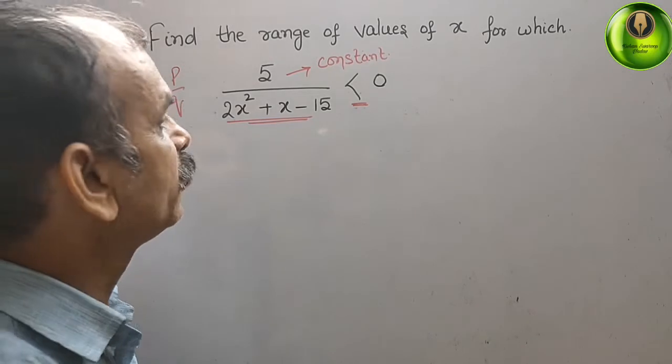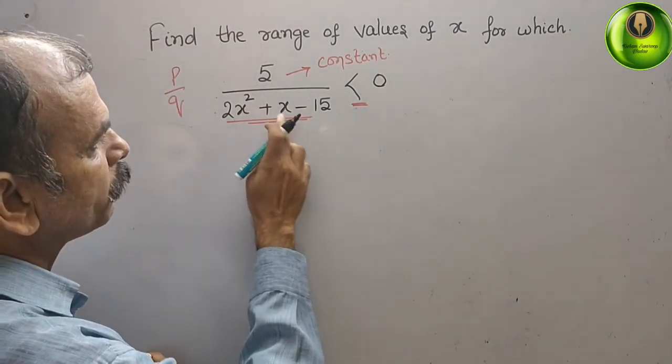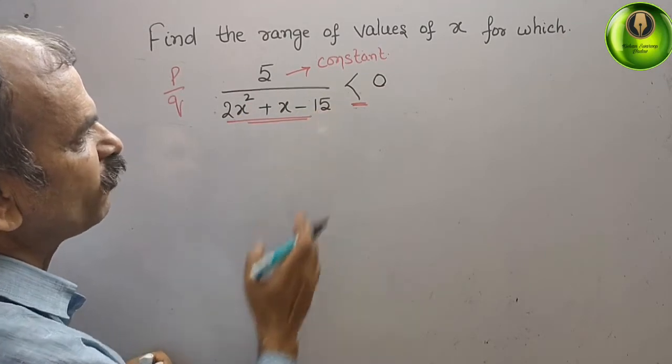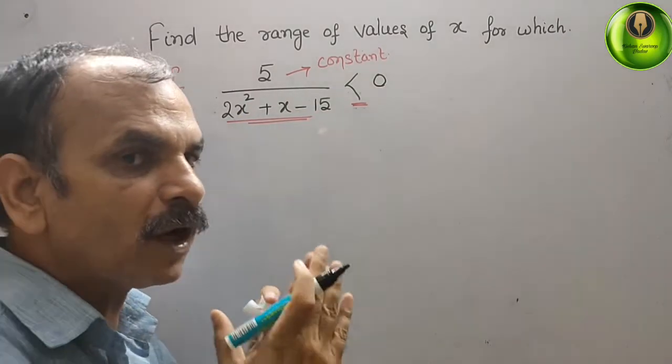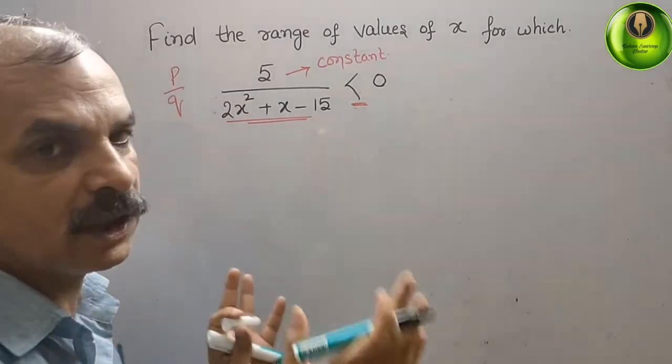So what we will get: 2x² + x - 15. Just go for middle term factorization. What you will get: 2×15 is 30.